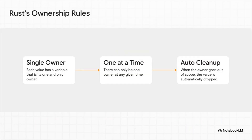So how does Rust pull this off? It all comes down to its secret weapon: the ownership model. It's really just three simple rules. One, every value has an owner. Two, there can only be one owner at a time. And three, when the owner is done, the value gets cleaned up automatically. This one system completely gets rid of the need for garbage collectors or manual memory management, which wipes out whole categories of bugs from the get-go.